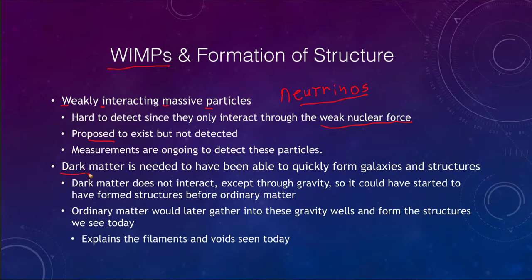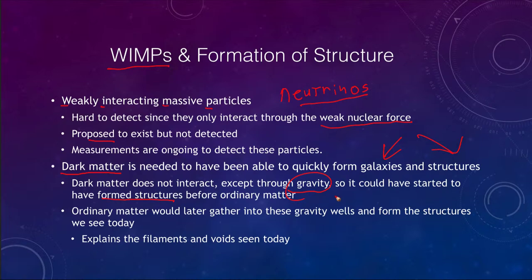What we need for structure to form is dark matter that has a lot of mass. Without it, we would not have formed the galaxies and structures we see in the universe today on the correct time scale. Dark matter does not interact except through gravity, so it could have started to form structures before ordinary matter. Because it is not affected by the electromagnetic force, it could have begun to collapse earlier, and ordinary matter — the stars and galaxies we see — would gather into these gravity wells, forming the filaments and voids we observe today.